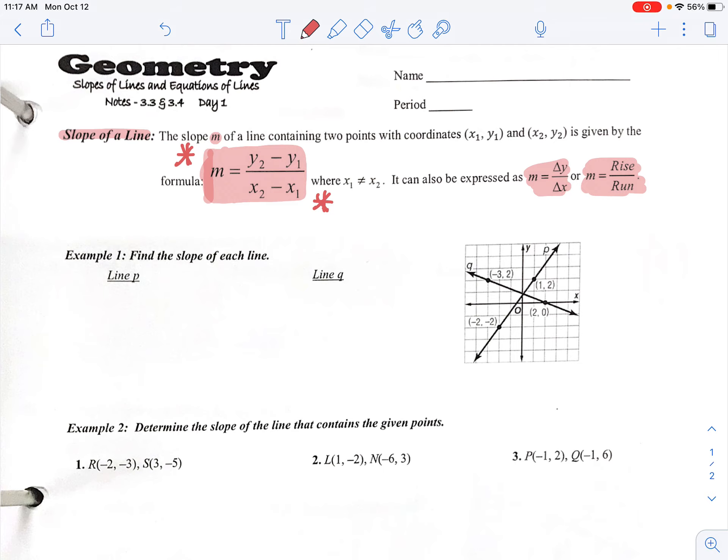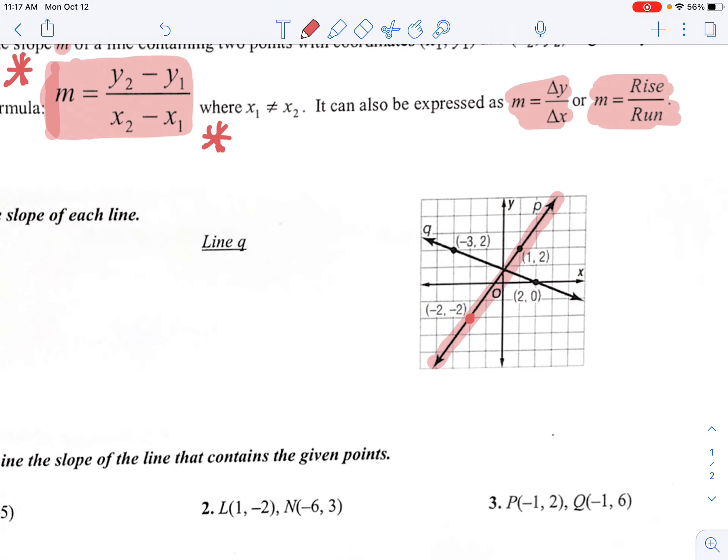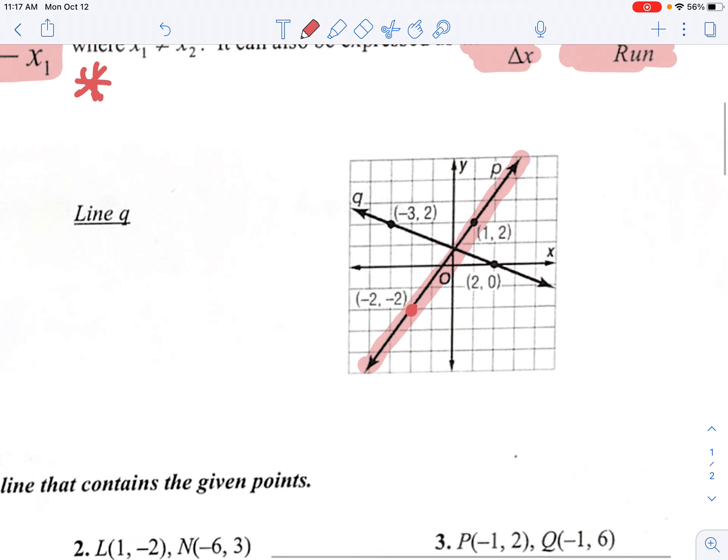So we're just doing a lot of practice here. The first example says we're going to find the slope of each line, and they give us a picture. So I'm going to show you how to do it with a picture and I'm going to show you how to do it with the actual formula itself. So line P. Here is line P. You're going to start at the point that's on the left side of that graph. So the left point is right here, that negative 2. Now I'm going to zoom in here for a second so we can see it a little better.